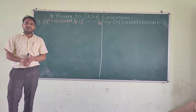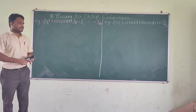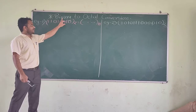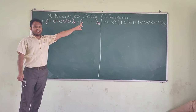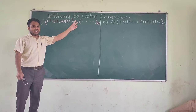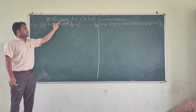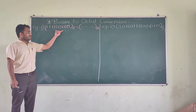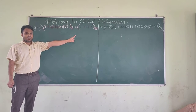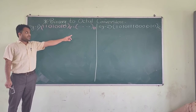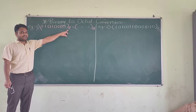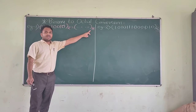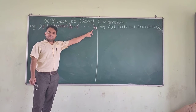Hello, today we will see the next number conversion, that is binary to octal. We have to convert a given number which is in binary form into its equivalent octal number system. We know that the base of the binary number system is 2 and the base of the octal number system is 8.